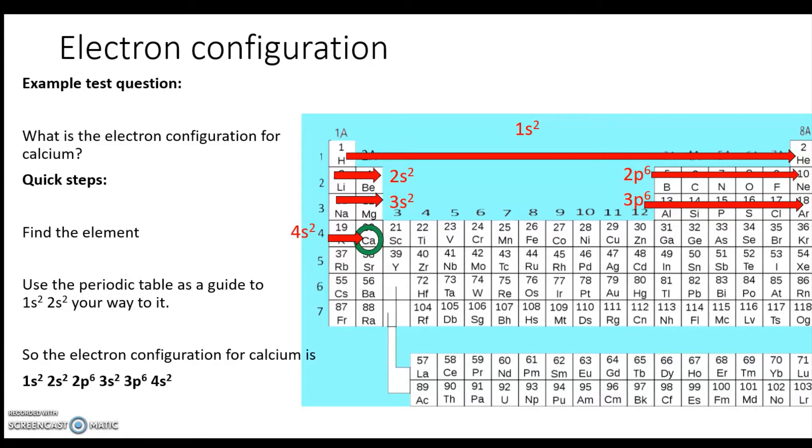So the electron configuration for calcium is 1s² 2s² 2p⁶ 3s² 3p⁶ 4s². And since that's pretty lengthy, and we know that the electron configuration for argon is right here, we can shorten it greatly by just saying [Ar] 4s². Isn't that a relief?